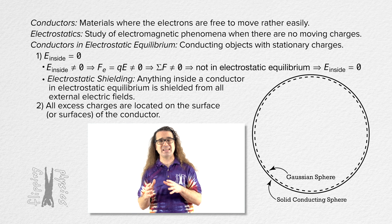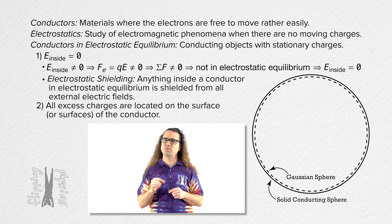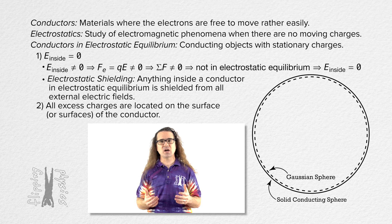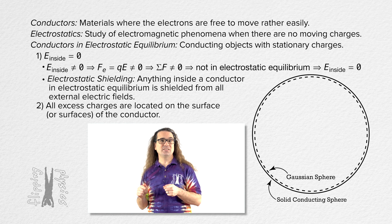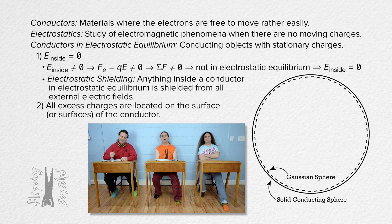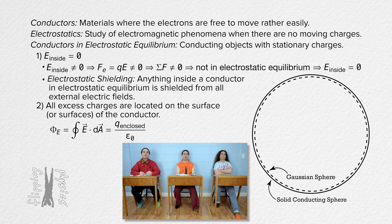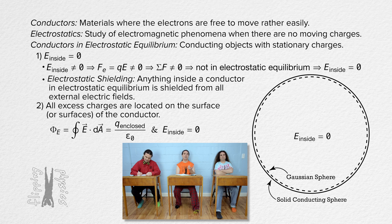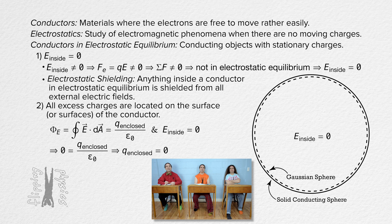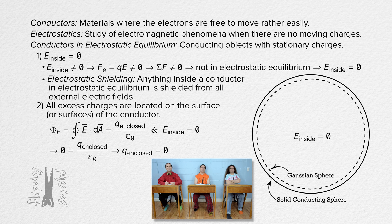I've exaggerated the difference in spherical radii in the illustration so you can actually see the Gaussian sphere. Remember the Gaussian sphere is only a tiny bit smaller than the solid conducting sphere. Bobby, please use Gauss's law to prove the excess charges in the solid conducting sphere are concentrated on the surface. Gauss's law states that the electric flux through a closed surface equals the closed surface integral of the dot product of the electric field and the infinitesimal area vector dA, and it equals the charge enclosed in the Gaussian surface divided by the permittivity of free space. But we already know the electric field inside the Gaussian sphere equals zero — which means the electric flux through the Gaussian sphere equals zero, which means the charge enclosed in the Gaussian sphere equals zero. Therefore, all the excess charges must be outside the Gaussian sphere and therefore all the excess charges must be on the surface of the conductor.